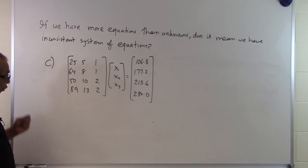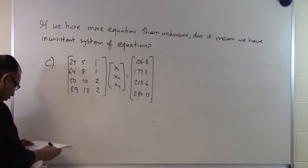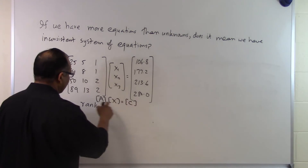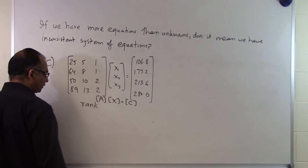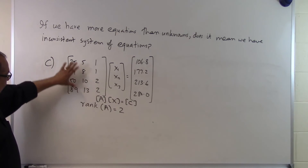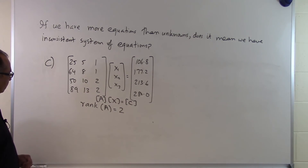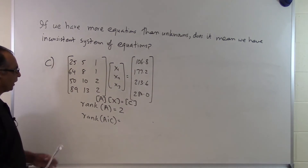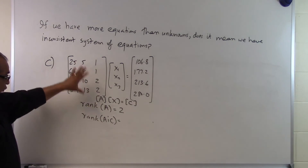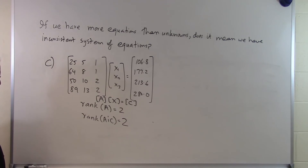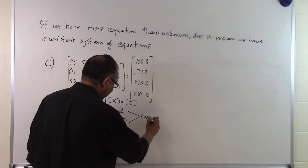Again somebody gives us 4 equations and 3 unknowns and asks whether this system is consistent or inconsistent. Writing it symbolically as Ax = C, we find the rank of the coefficient matrix A turns out to be 2. The augmented matrix is formed by adding the right-hand side as a fourth column, giving a 4×4 matrix, and its rank also turns out to be 2. Since the rank of the coefficient matrix equals the rank of the augmented matrix, we have a consistent system of equations.